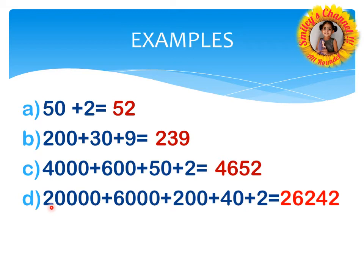The leftmost initial digit in 20000 is 2. In 6000, what is the leftmost initial digit? Yes, it is 6. Next, in 200 it is 2, and in 40 it is 4. Again, 2 is a single digit number, so it directly comes. So 20000 plus 6000 plus 200 plus 40 plus 2 equals 26242. That is one way of writing short form.